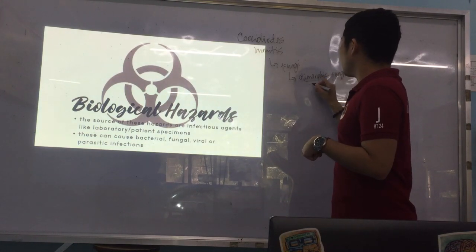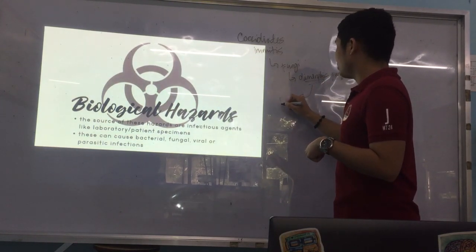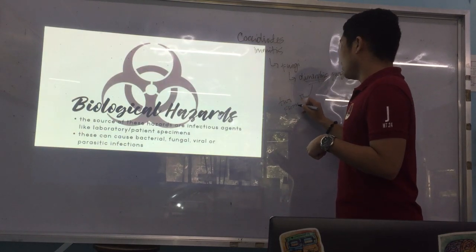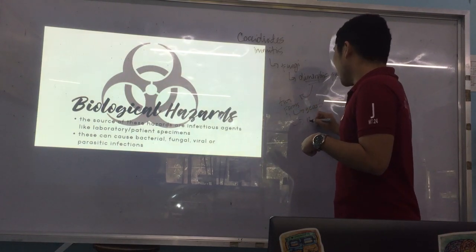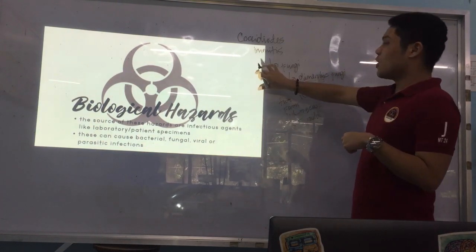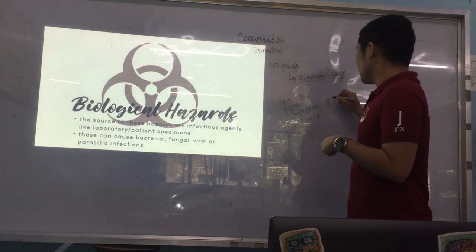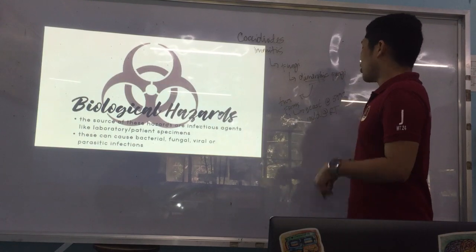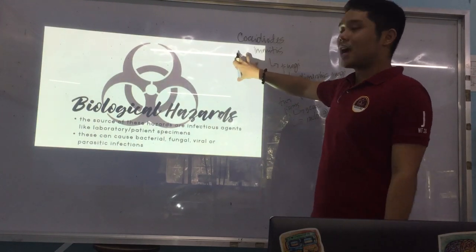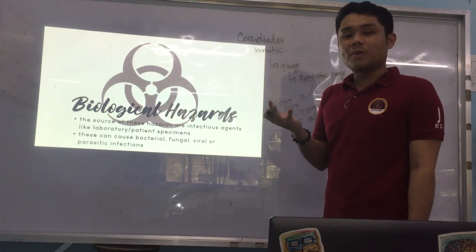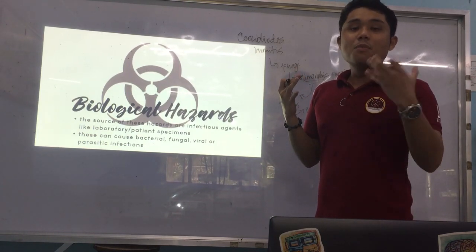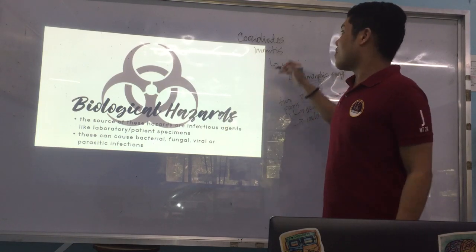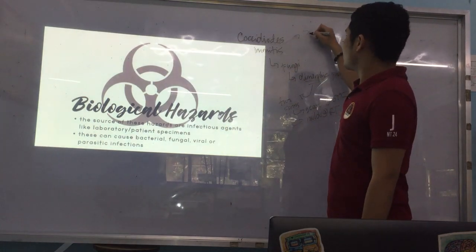Dimorphic means it can exist in two forms: either a yeast or a mold. Coccidioides immitis is a yeast at body temperature, 37 degrees Celsius, and a mold at room temperature. It is a very deadly kind of fungus because it can exist as either mold or yeast depending on the temperature. The disease it causes is known as San Joaquin Valley Fever.